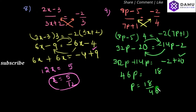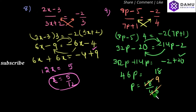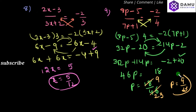P will be equal to 18 by 46. What you can do here is simplify: 2 into 9 is 18, and 2 into 23 is 46. So, p will be equal to 9 by 23.